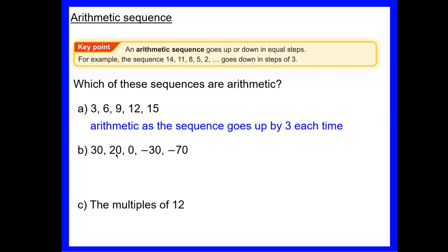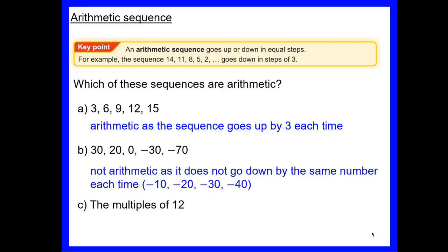Our second sequence: from 30 to 20 we've gone down by 10, from 20 to 0 we've gone down by 20, from 0 to minus 30 we've gone down by 30. We can already see we're not changing by the same amount each time, so that one is not arithmetic as it doesn't go down by the same number each time.